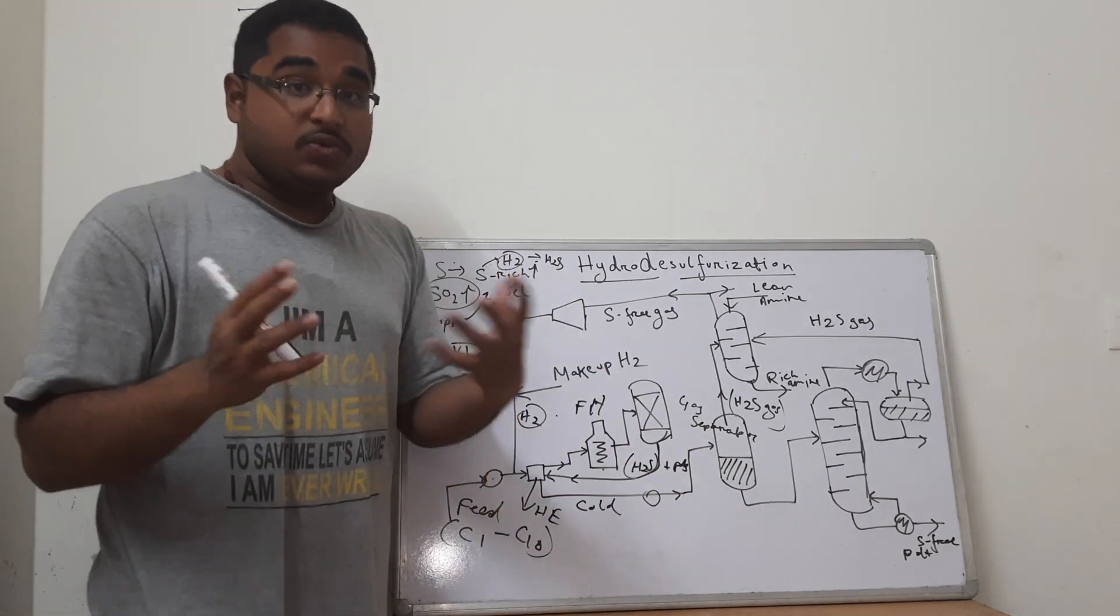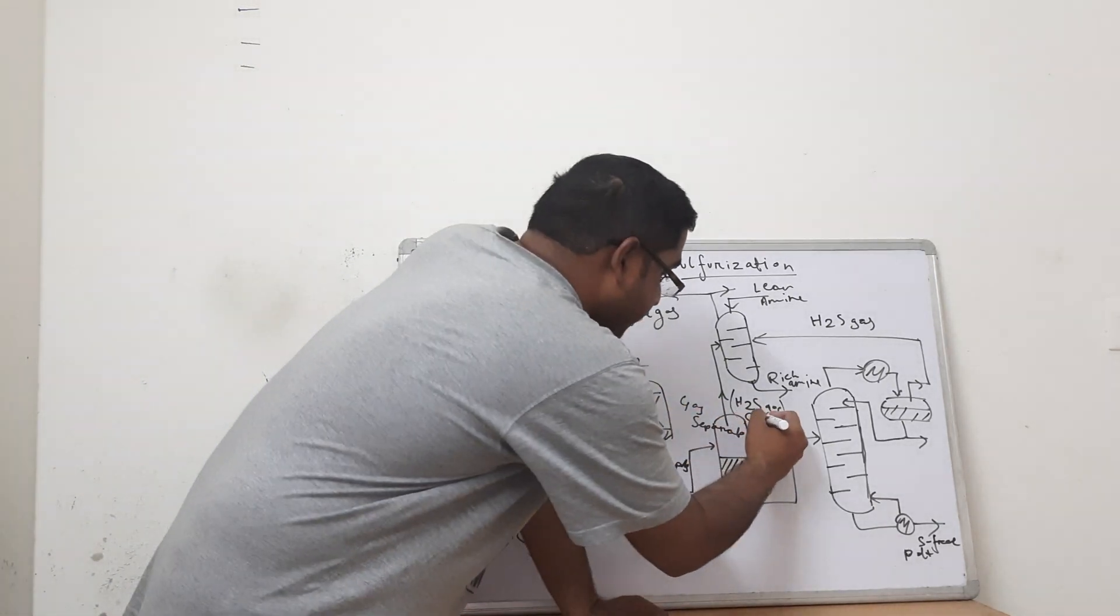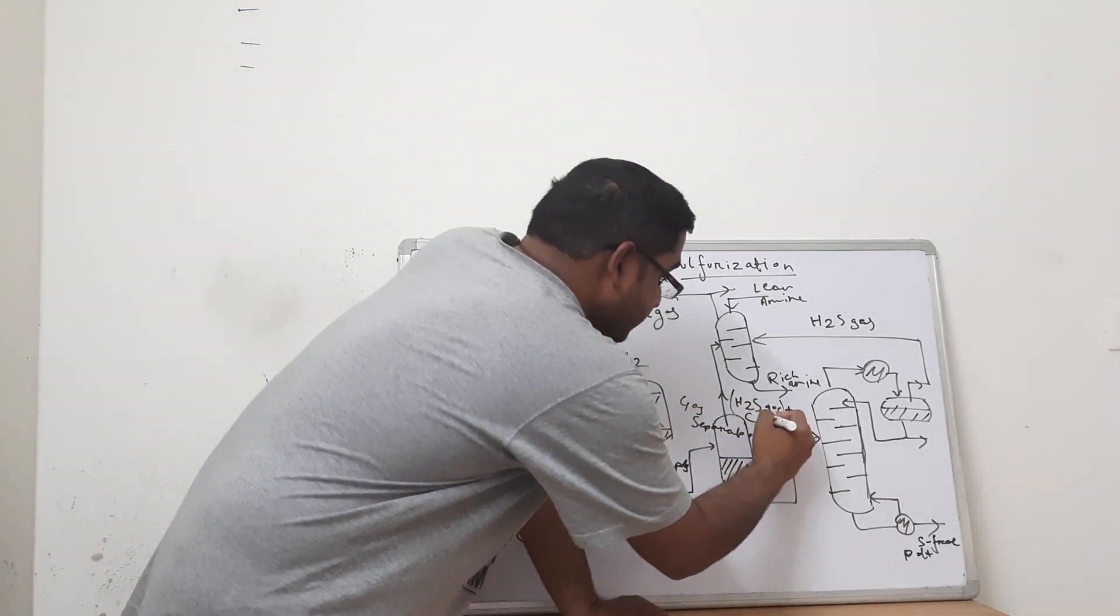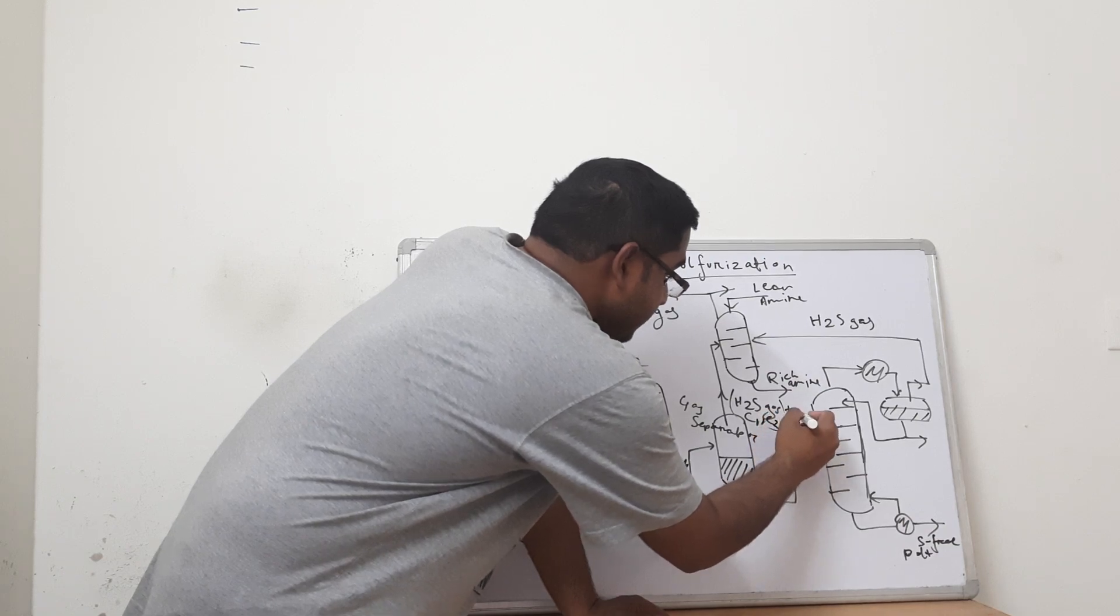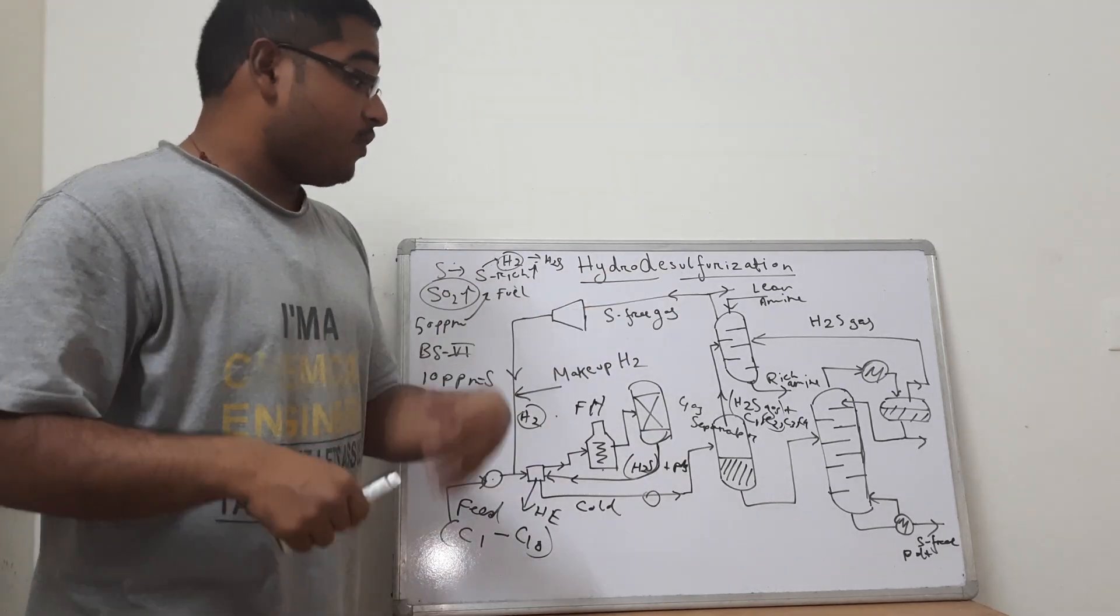Let us consider. So C1, C2, C3, C4, these will also be primarily present as gas stream. So H2S gas plus C1, C2, C3, C4 will be present. So we need to separate out just C1, C2, C3, C4 from the H2S gas.